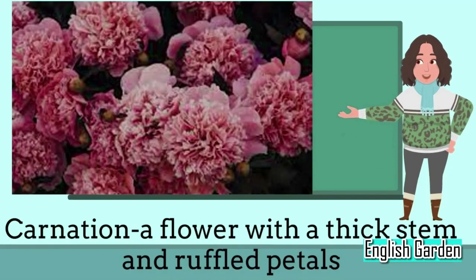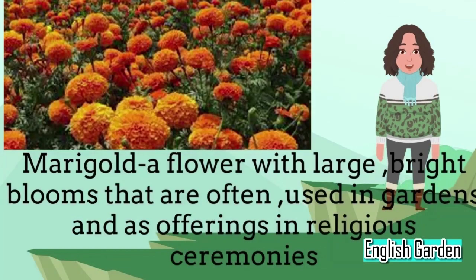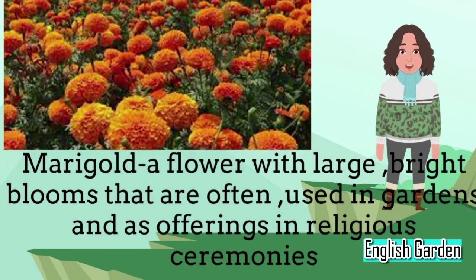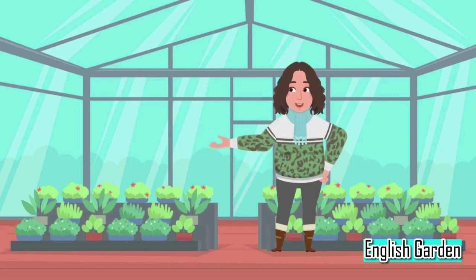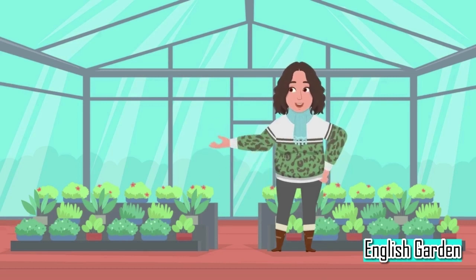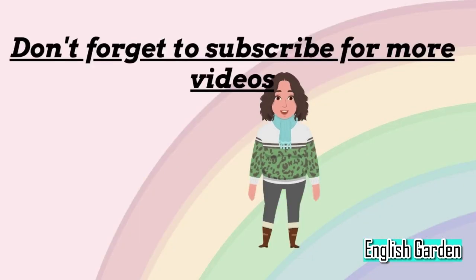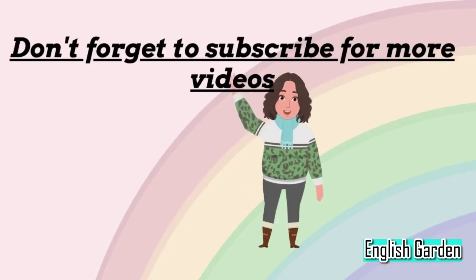Carnation: a flower with a thick stem and ruffled petals. Marigold: a flower with large, bright blooms that are often used in gardens and as offerings in religious ceremonies. These are just a few examples of the many different types of flowers that you can learn about. Don't forget to subscribe for more videos.